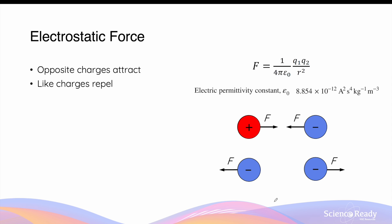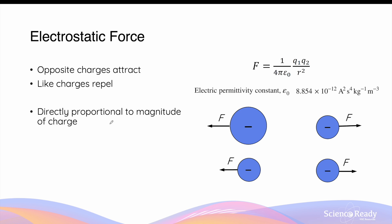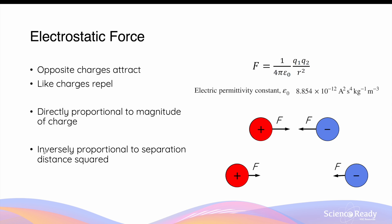This equation is useful for understanding the factors that affect the magnitude of electrostatic force. Firstly, the magnitude of electrostatic force is directly proportional to the magnitude of charge — if one or both charges increase in magnitude, the force also increases; if charge decreases, so does the force. Additionally, the magnitude of electrostatic force is inversely proportional to the separation distance squared — not just the distance, but the distance squared.